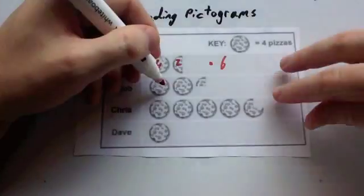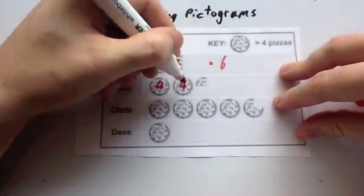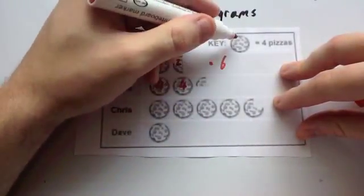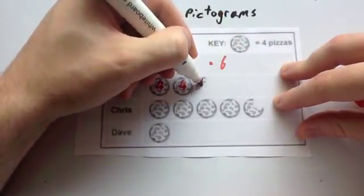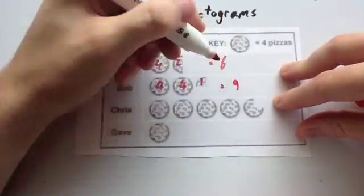Bob has got two whole pizzas, so he's got four and four. He's then got a quarter of a pizza. Well, if a whole pizza is four, a quarter of one would be one. So altogether he's eaten nine pizzas.